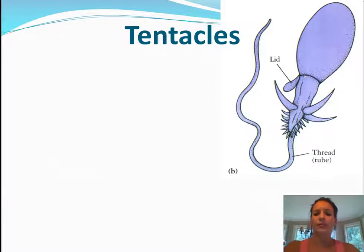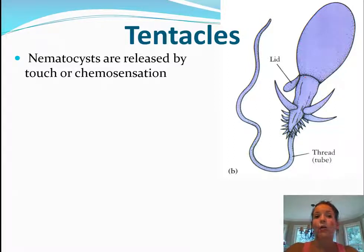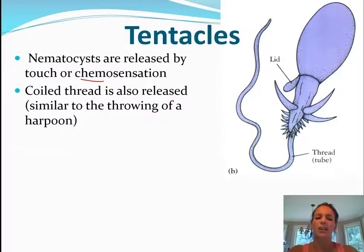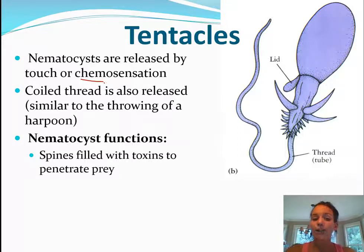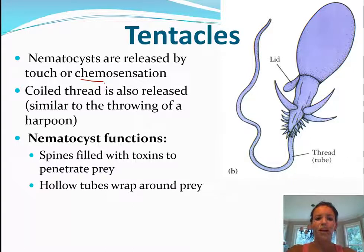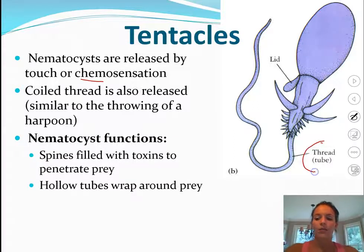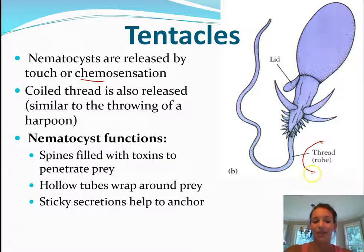Looking at a tentacle specifically: the nematocysts are released by touch or chemosensation — meaning they can sense something chemically in the water. That coiled thread is then released, similar to throwing a harpoon. The spines are filled with toxins that penetrate the prey. Jellyfish don't typically feed on humans — the prey they attack are small enough to be killed or very immobile. The hollow tubes wrap around the prey, and sticky secretions also help anchor it.